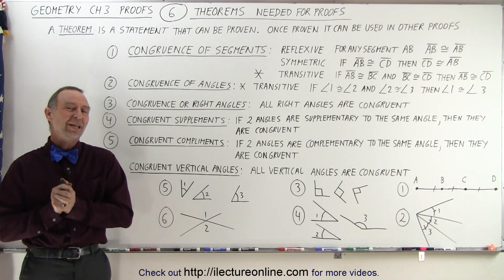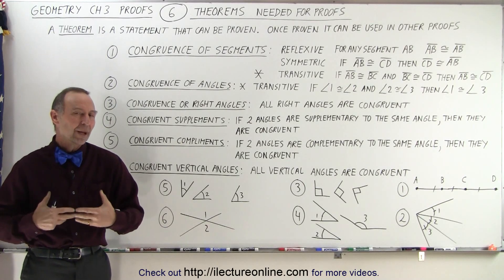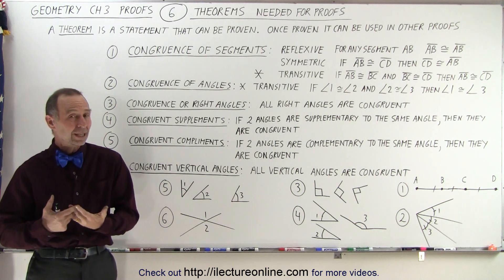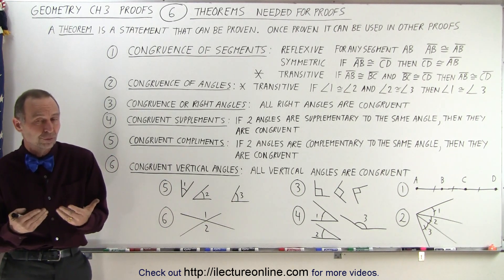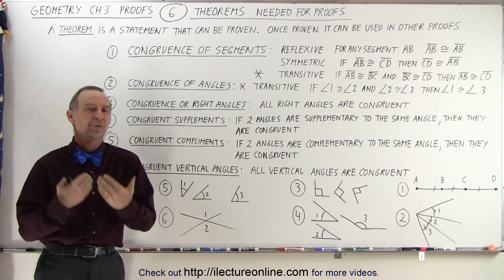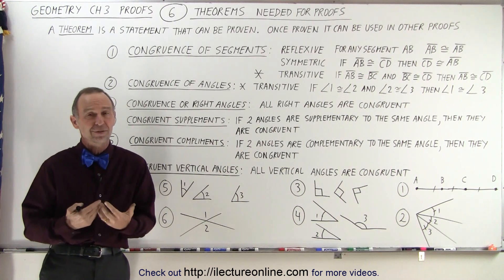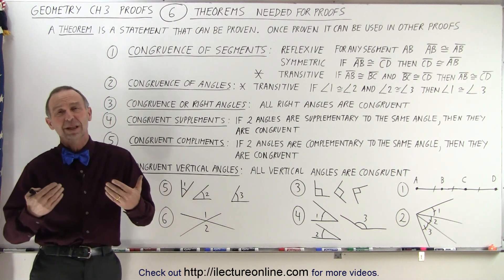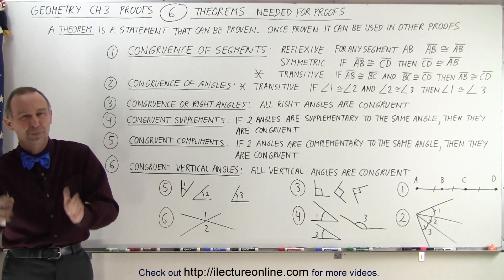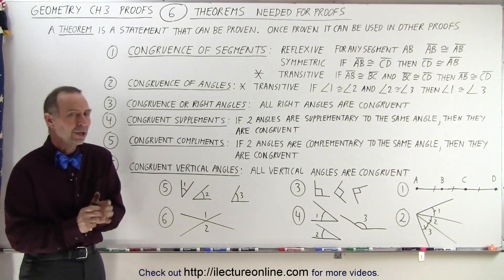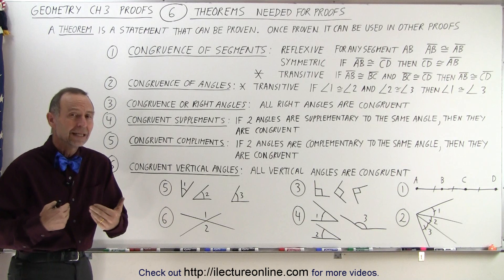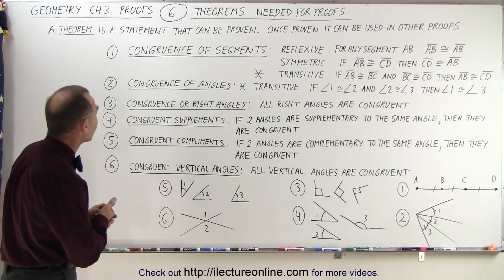Welcome to our lecture online. Now let's talk about theorems. What do we need theorems for? They can be used to prove proofs. But before we can use theorems, they need to be proven themselves. We're going to assume that they've already been proven, so we can use them — we don't have to prove them anymore. But let's take a look at some of the theorems that we're going to need in order to prove our proofs.